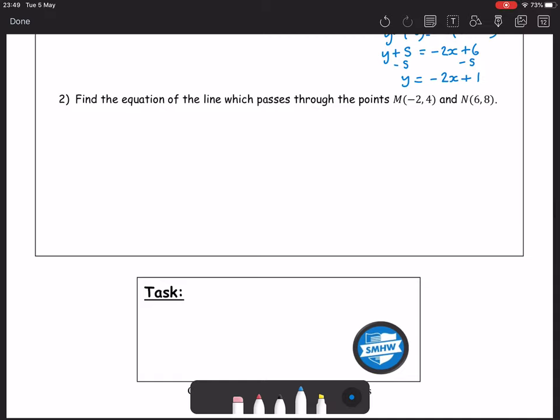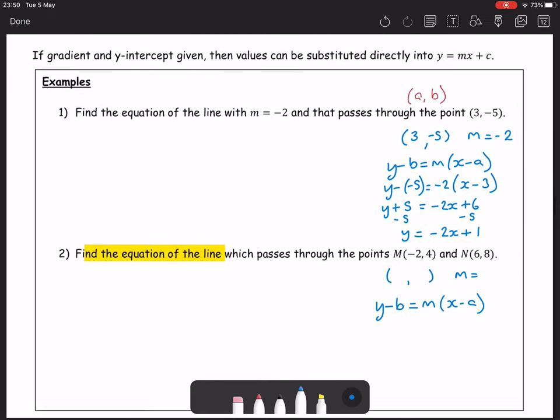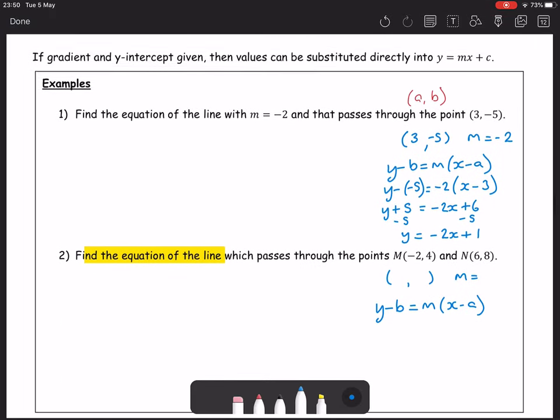Example 2, find the equation in a line which passes through the points m and n. The fact that again has to find the equation in a line we will be looking to do our formula y minus b equals mx minus a where we have a point required and a gradient. Again, looking at point gradient equation, we actually have the choice of two points.